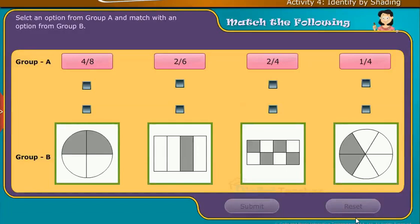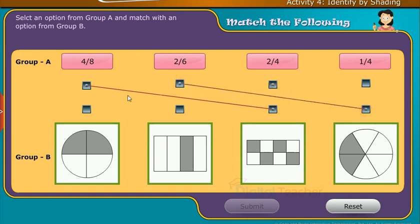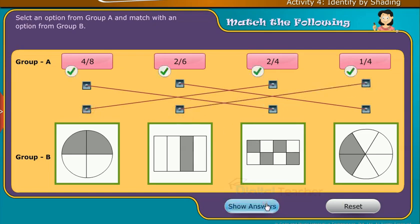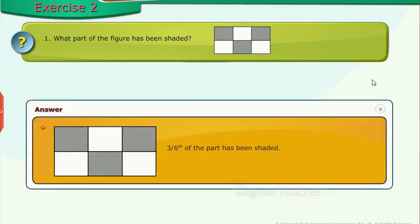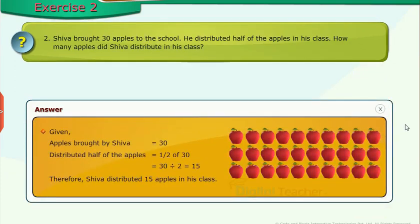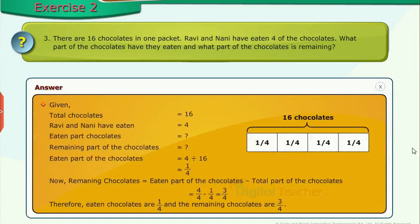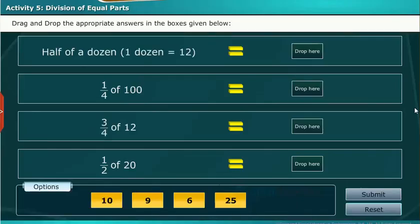Here we will do another activity to find the shaded parts according to the fraction. Select an option from group A and match with an option from group B. Let us see some exercise problems. Let us perform an activity on division of equal parts — drag and drop the appropriate answers in the boxes given below.